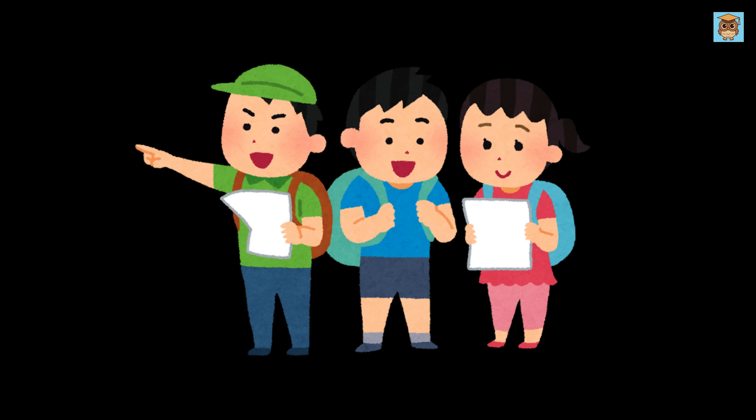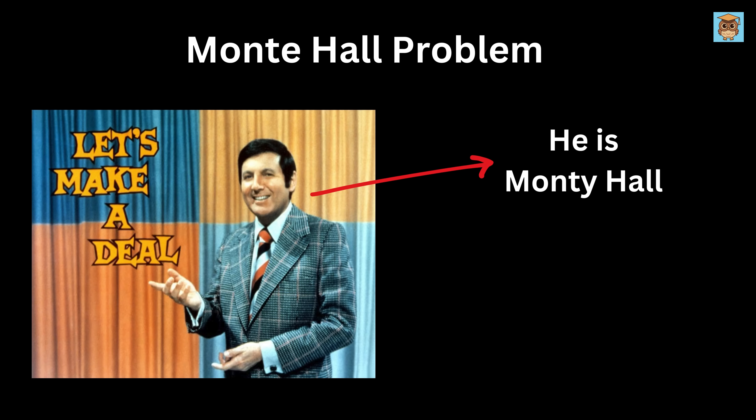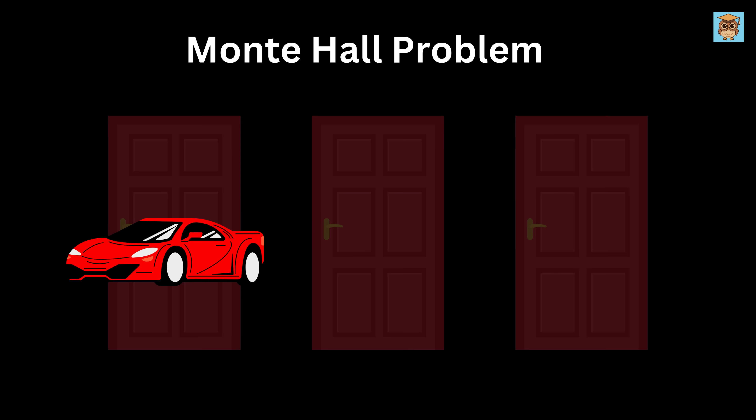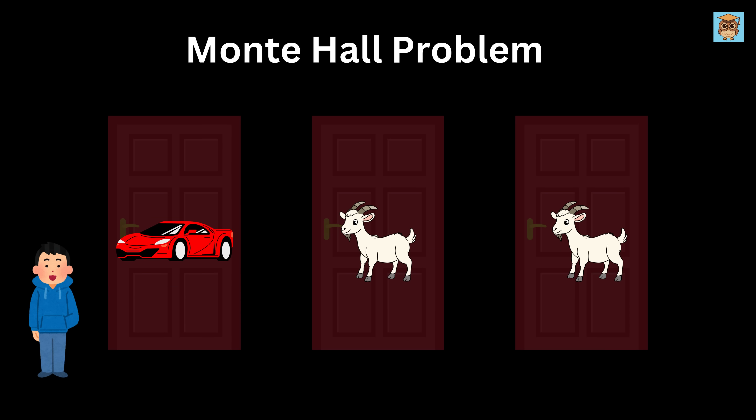We will explore a well-known example of a counterintuitive problem in math, which is the Monty Hall problem. Imagine you're on a fun American game show of the 60s, Let Us Make a Deal, where there are three closed doors. Behind one door is a shiny car, while behind the other two doors, the show host hides goats. You are asked to choose a door, giving you a one-in-three chance of having picked the car and a two-in-three chance of having picked a goat.